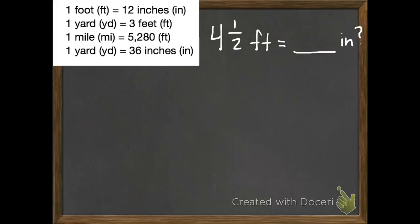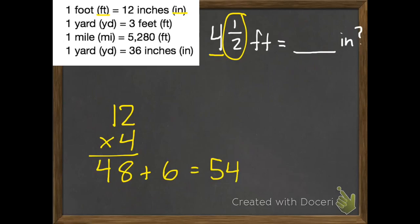I'm going to break apart our mixed number. So I'm going to use just the 4 feet for now. We're going to use our fact over here at the top: 1 foot equals 12 inches. So if I have 4 feet times 12 inches, 12 times 4 is 48. Plus, just our 4 feet, we have 4 and a half feet. So I need to figure out this half of a foot. If 1 foot is 12 inches, and we have half of 12, that's going to equal 6 more inches. And 48 plus 6 equals 54. So 4 and a half feet equals 54 inches.